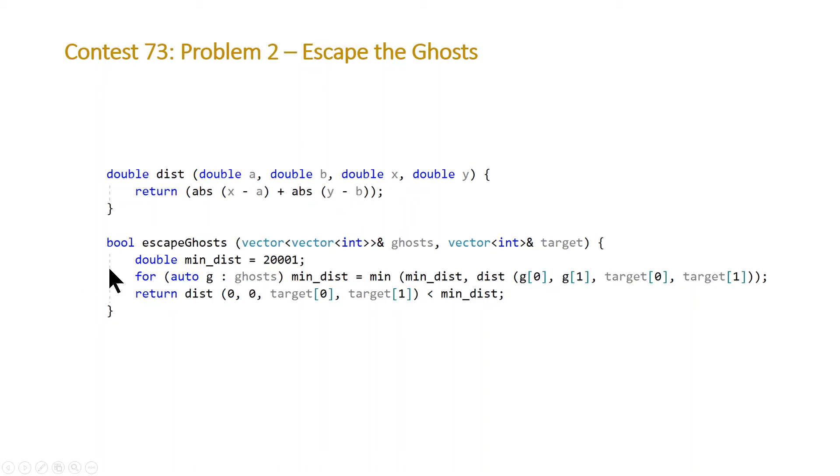And then so all we do here is we declare a minimum variable for the ghosts minimum number of moves. And we're going to use a range-based for loop to loop through this and reset our minimum anytime it's found that ghosts has less than the current minimum. And then at the end, we just return whether the distance that Pac-Man, the number of moves that Pac-Man takes to get to target is less than this minimum distance.